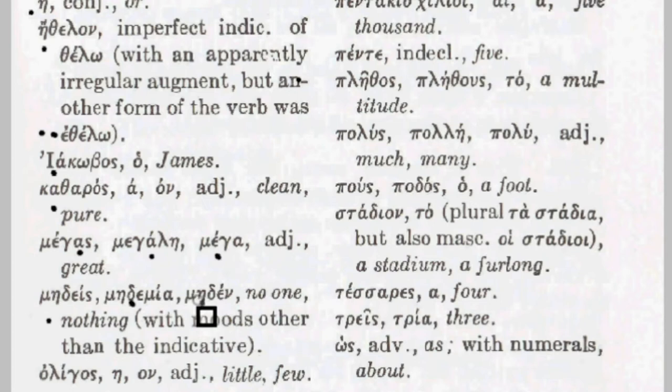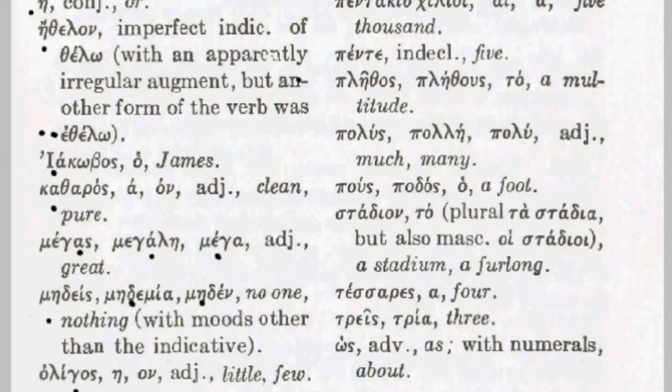Mēdeis, mēdemia, mēden means no one. We have a similar word oudeis. Mēdeis is used in non-indicative moods, whereas oudeis is used in indicative moods. In either case it simply means no one in a personal sense, or nothing in the impersonal sense. Next we have oligos, oligē, oligon, meaning few or little. You know the word oligarchy — rule by the few — and that's a word we got straight from the Greeks.